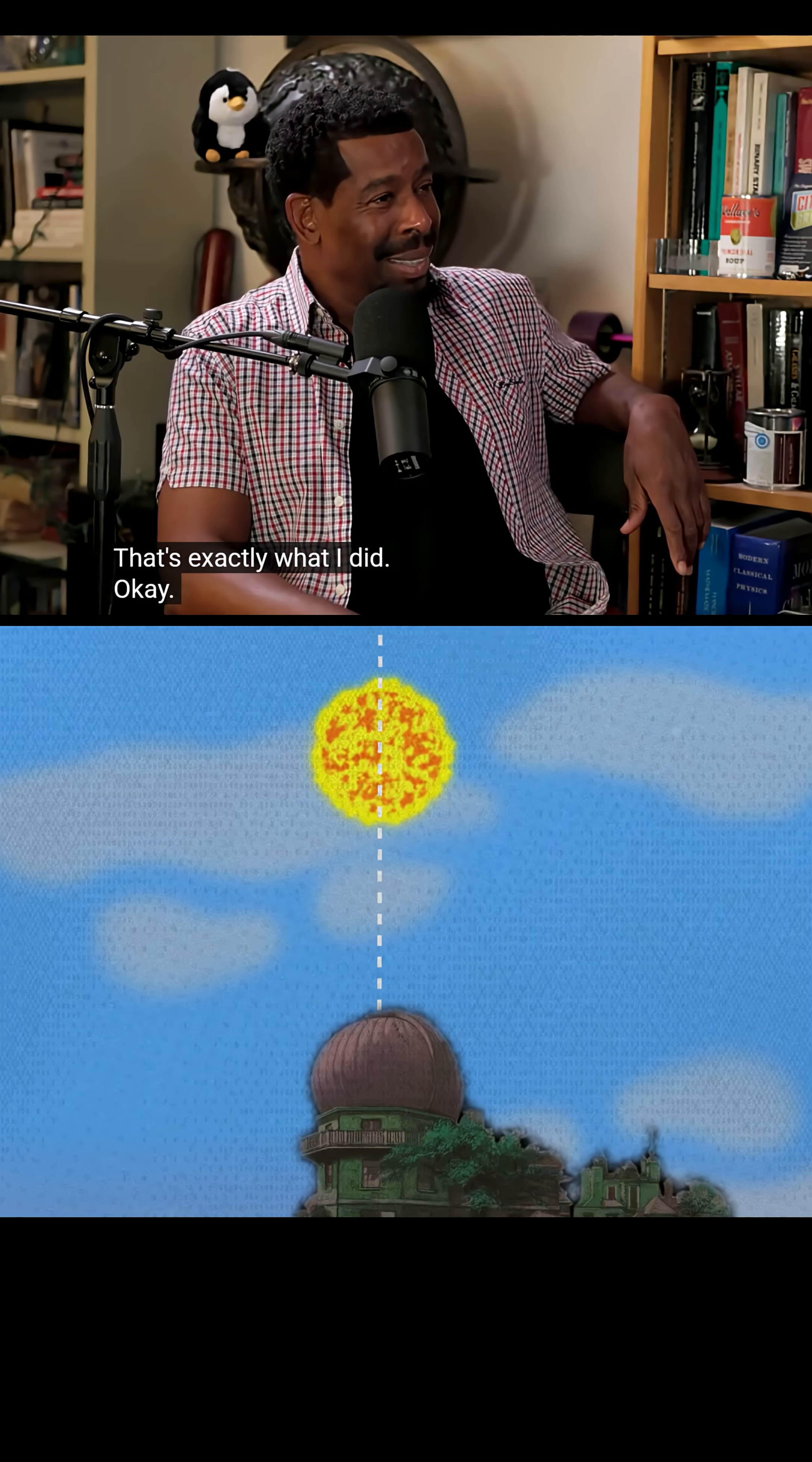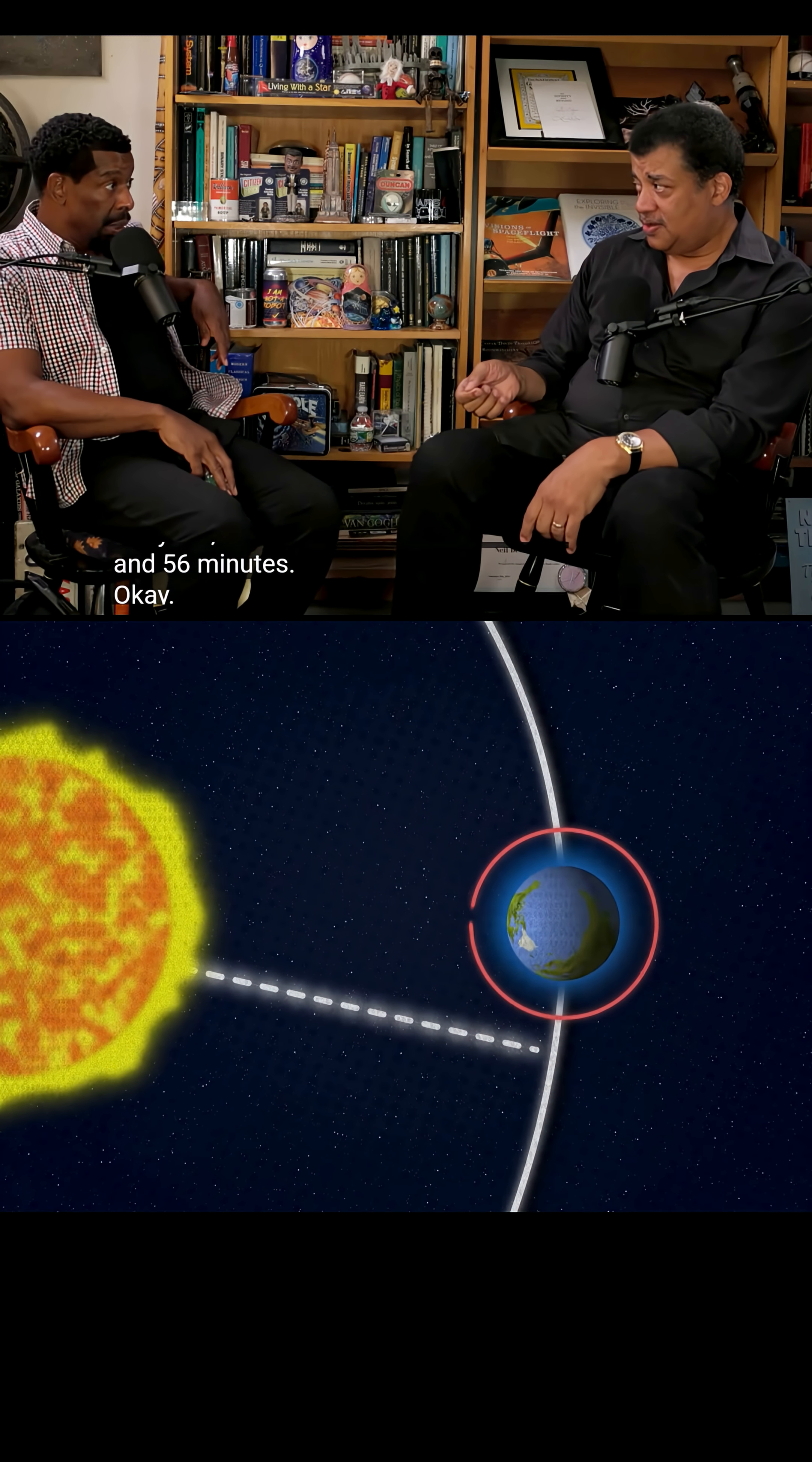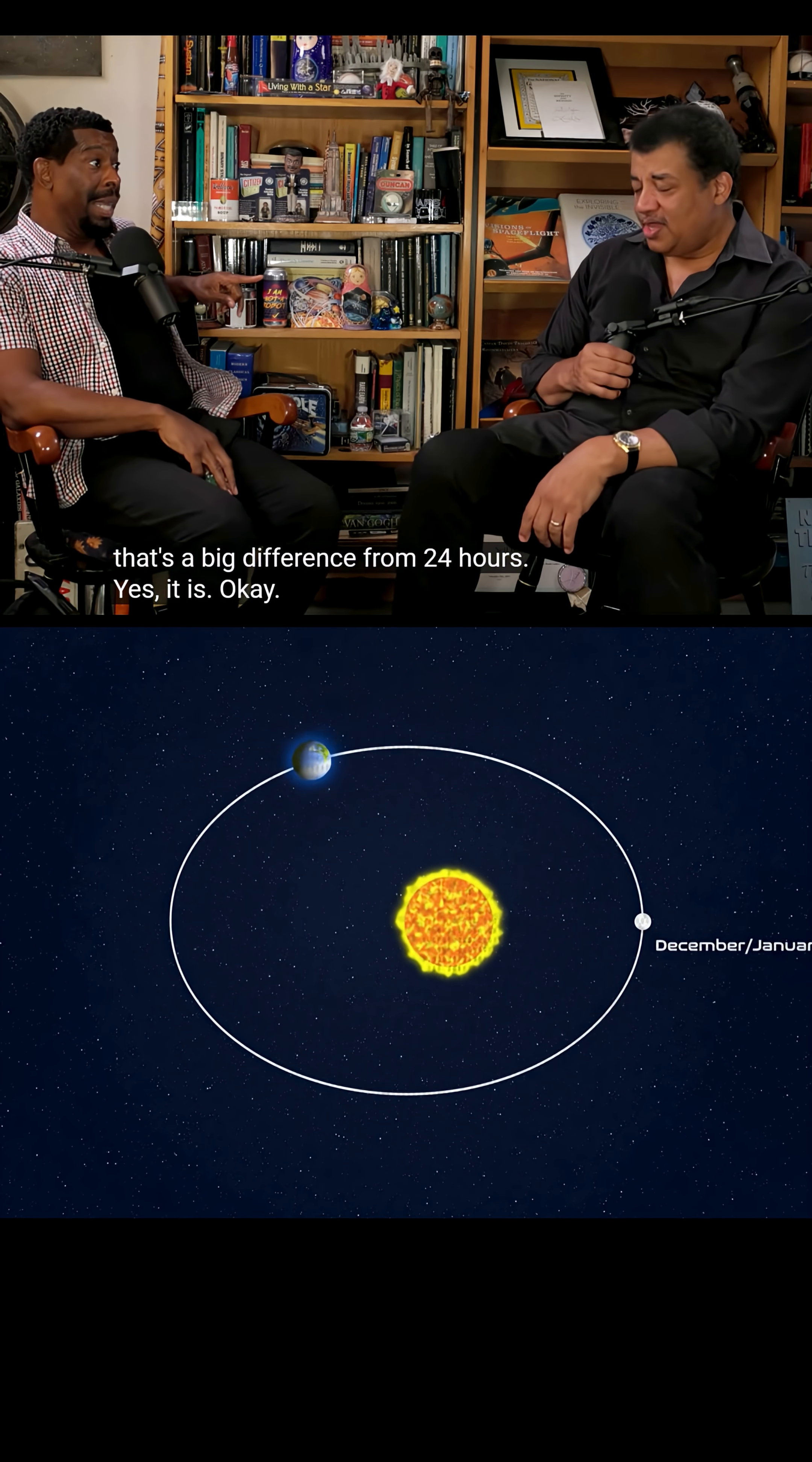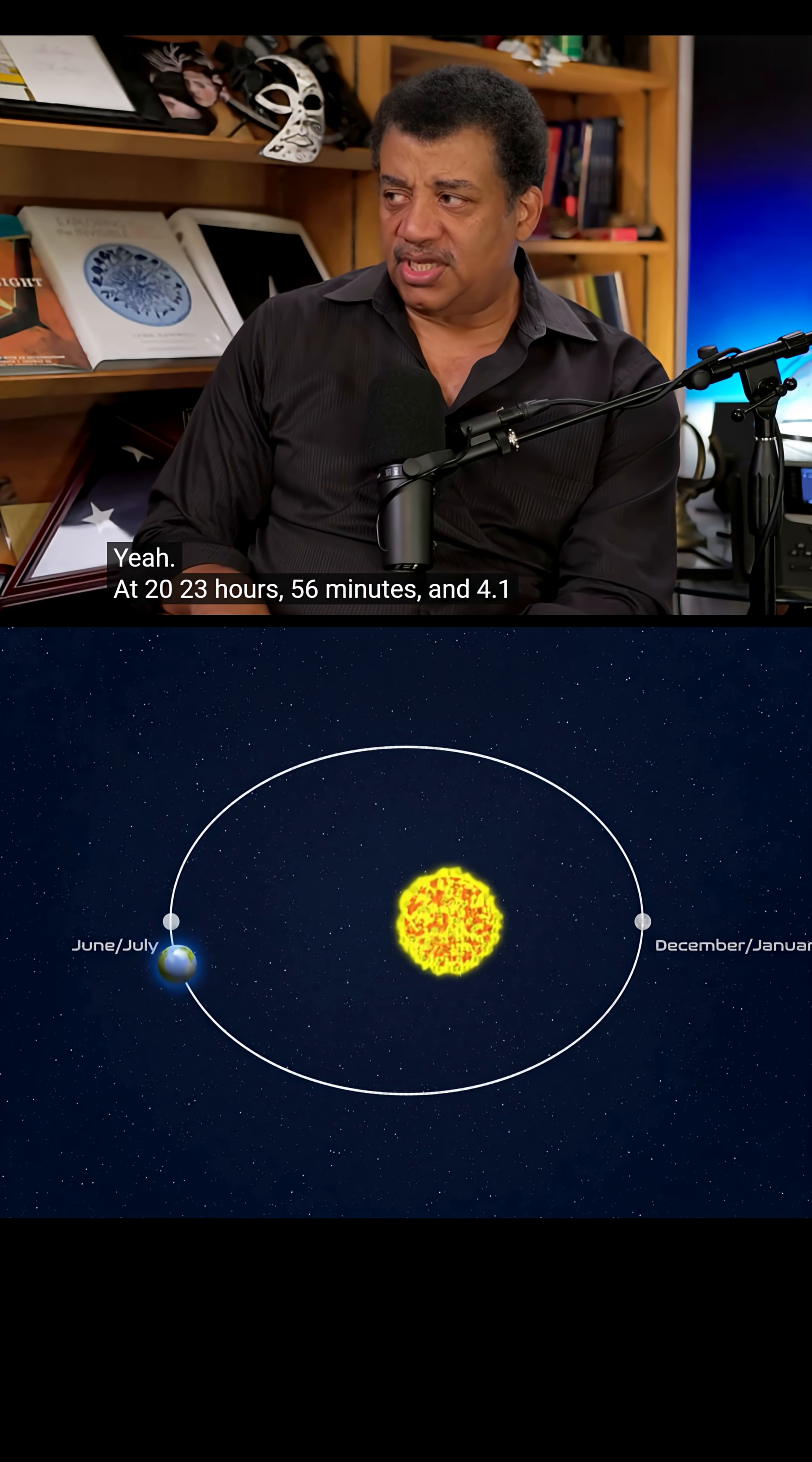Okay, so Earth rotates once in 23 hours and 56 minutes. Okay, that's believe it or not though, that's a big difference from 24 hours. Yes it is. Yeah, 23 hours 56 minutes and 4.1 seconds. Wow.